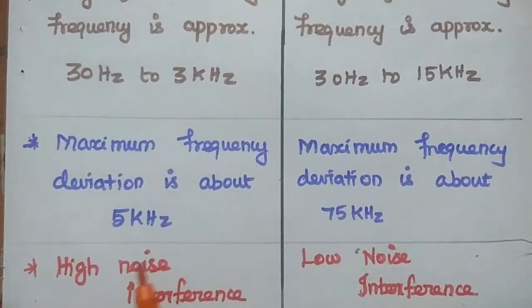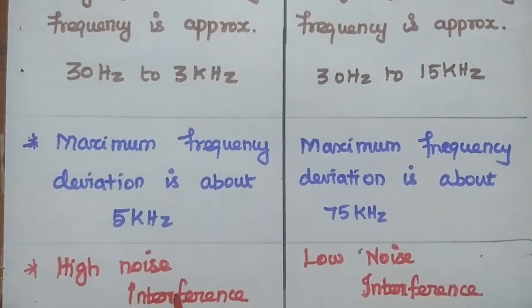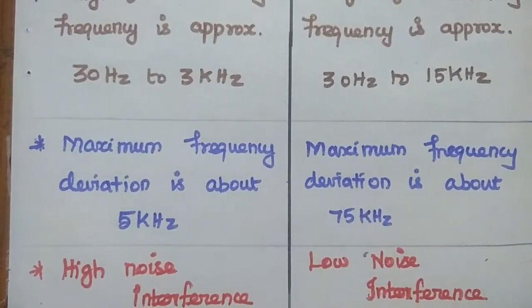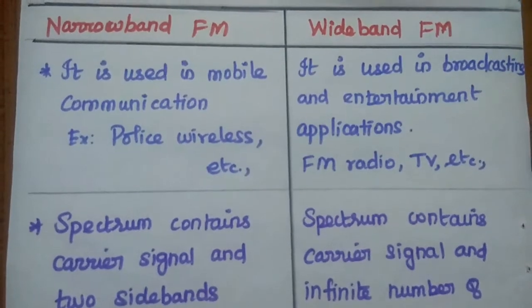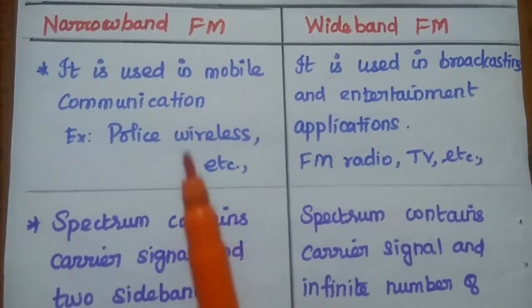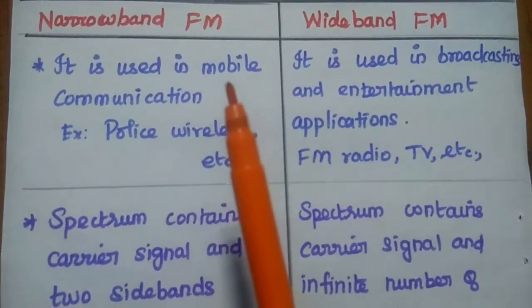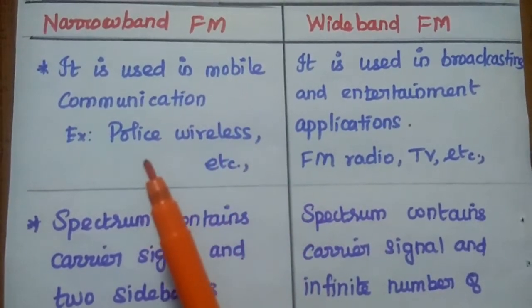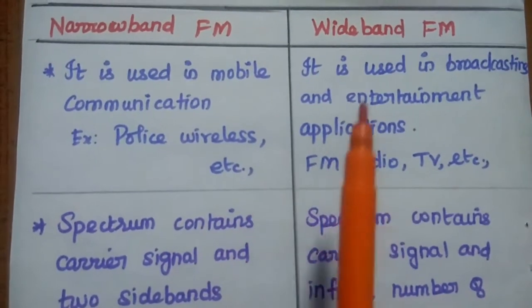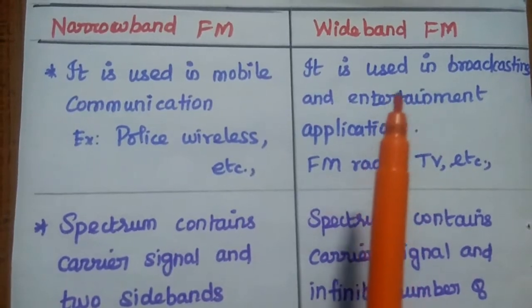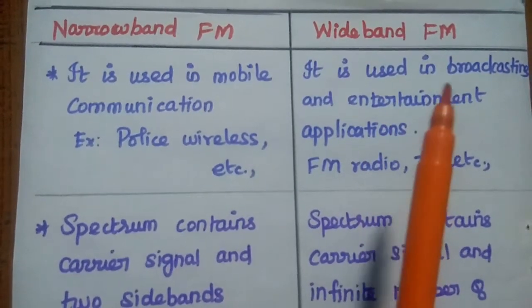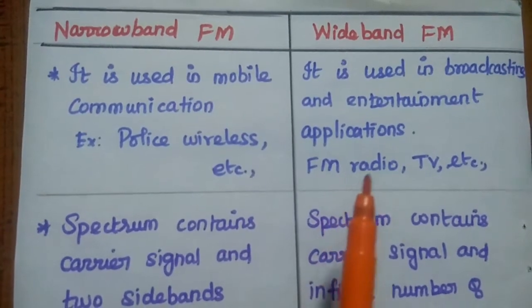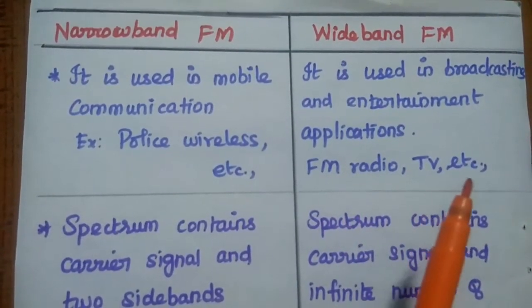Narrowband FM has very high noise interference, whereas wideband FM has low noise interference. Narrowband FM is widely used in mobile communication and point-to-point communication — for example, police and wireless communication. Wideband FM is widely used in broadcasting and entertainment applications like FM radio and TV sound reception.